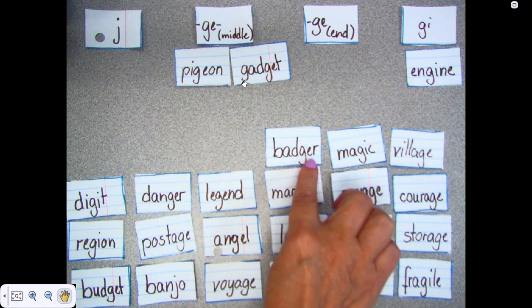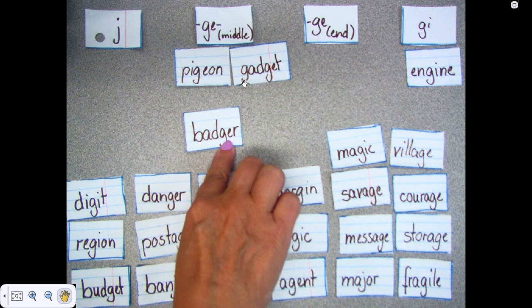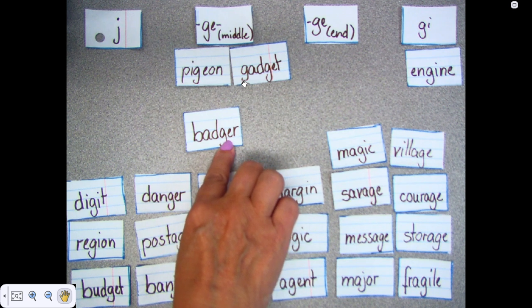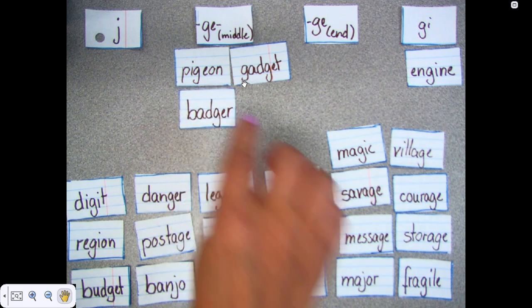Badger. Oh, again, I have badger. The G-E is what's making the sound, but there's an R at the end, so it goes in this column.